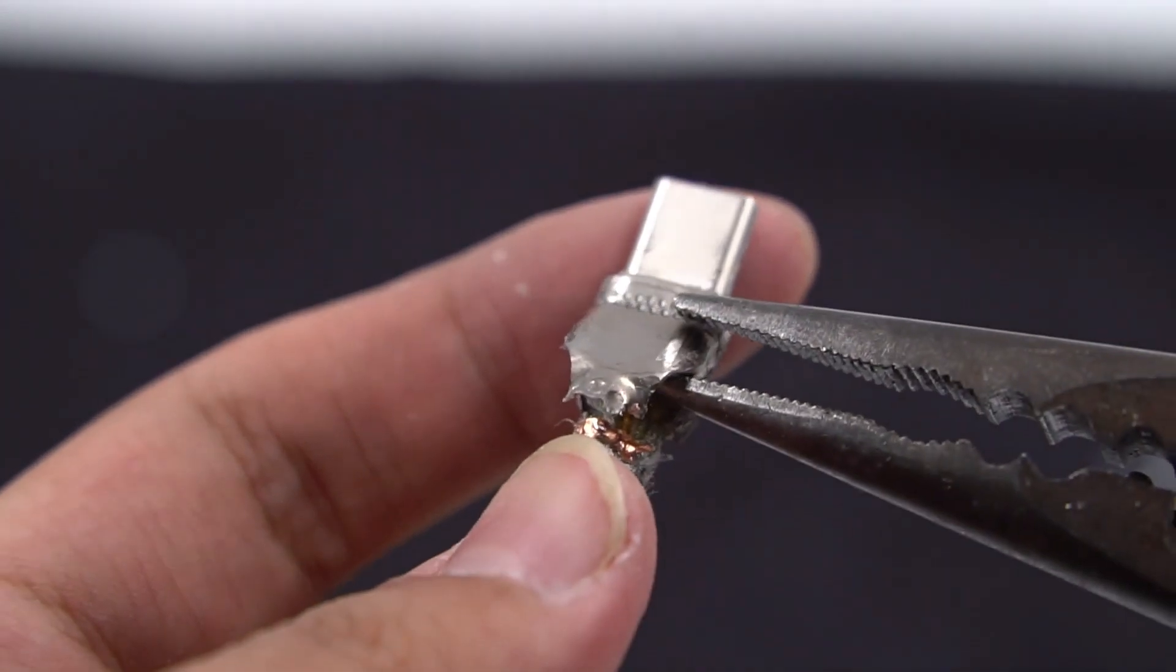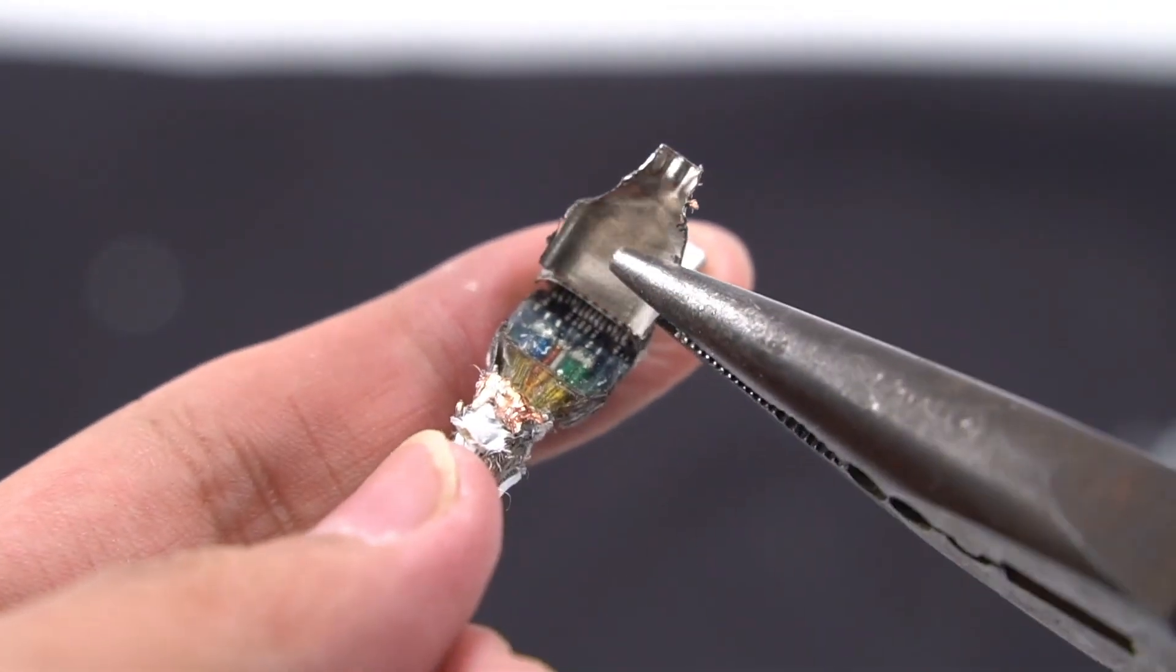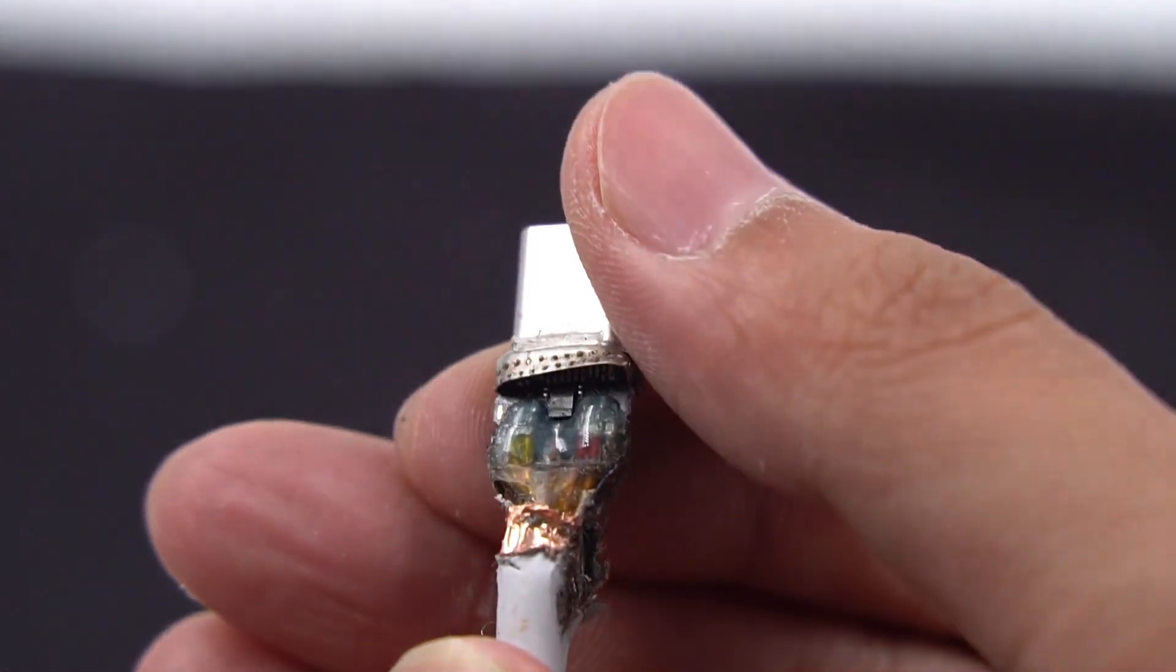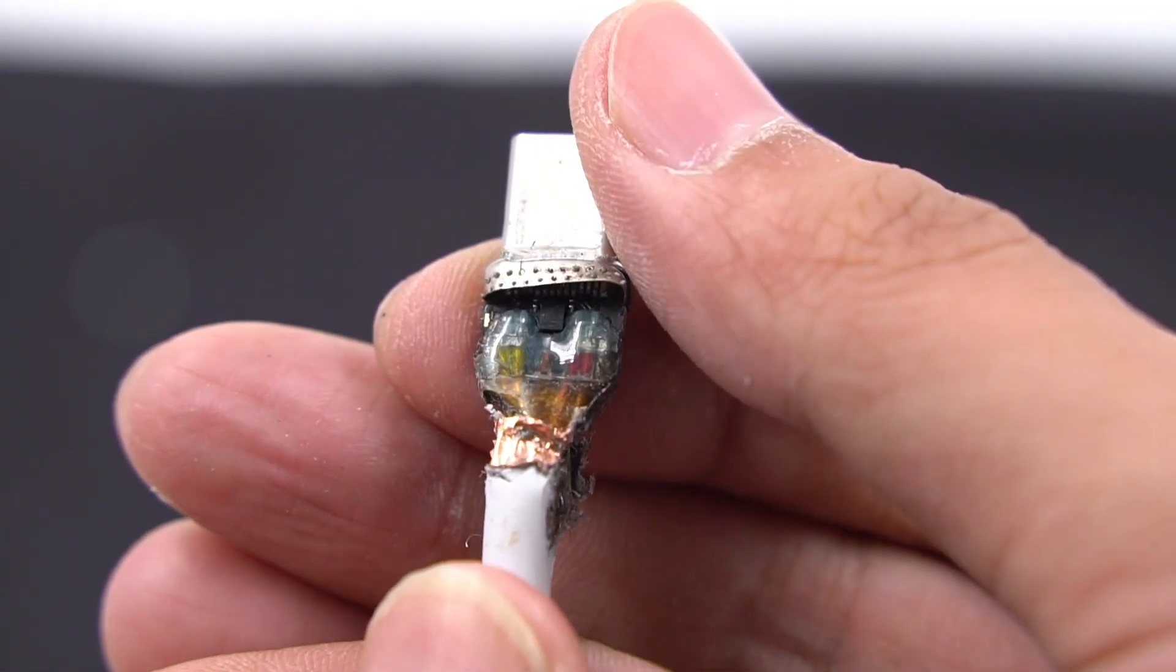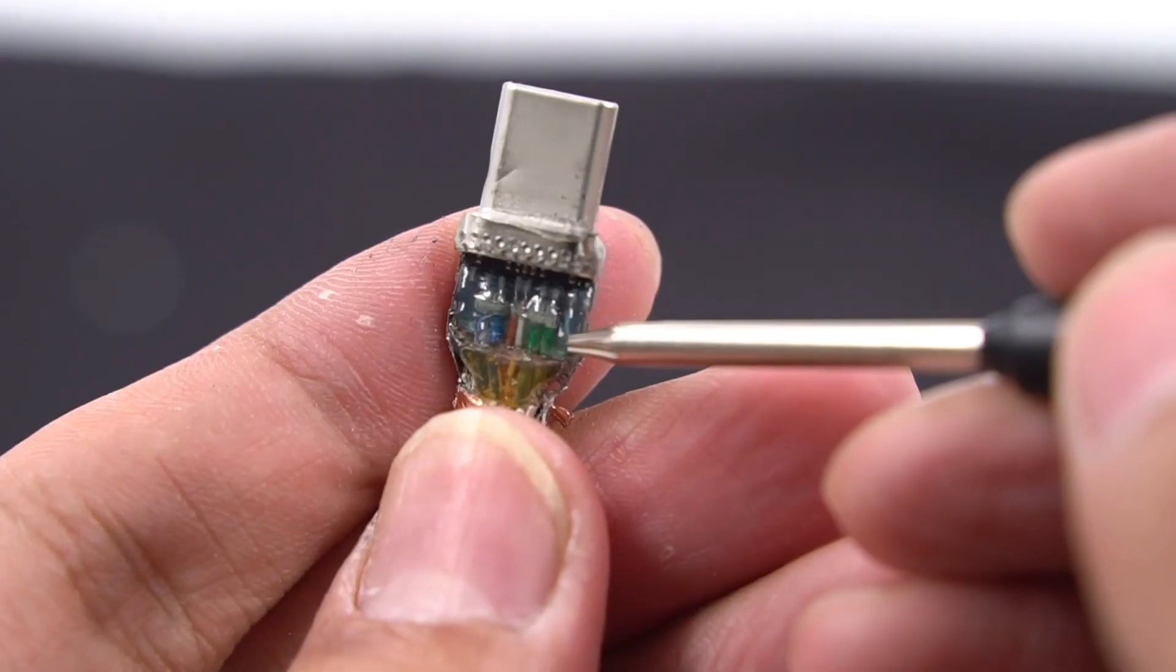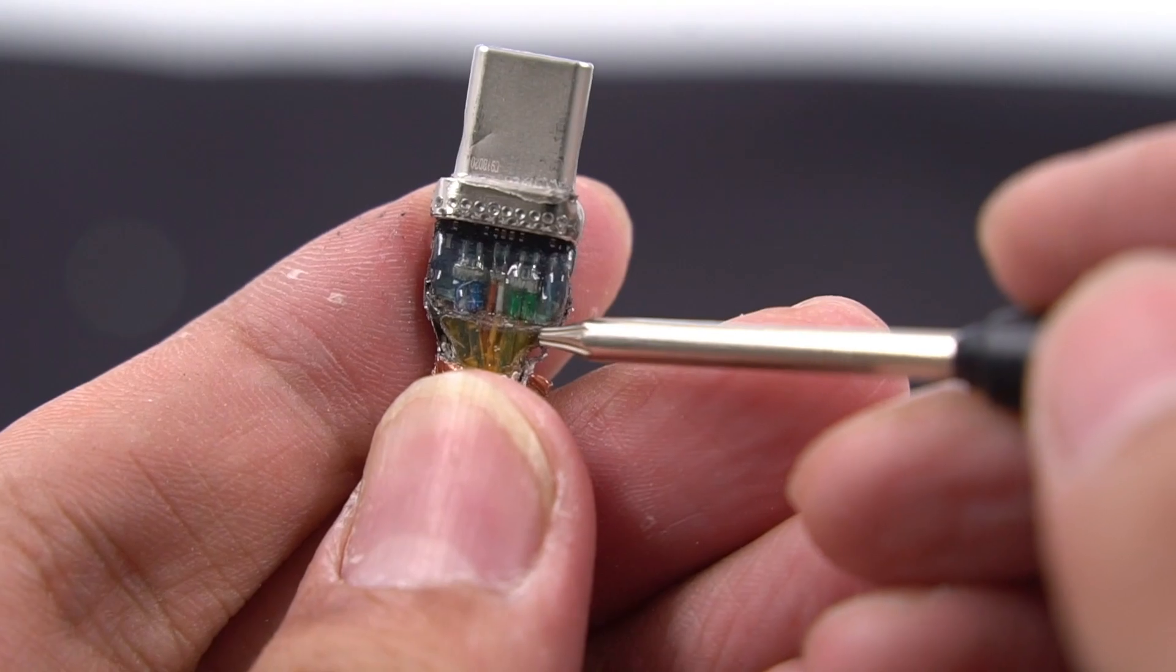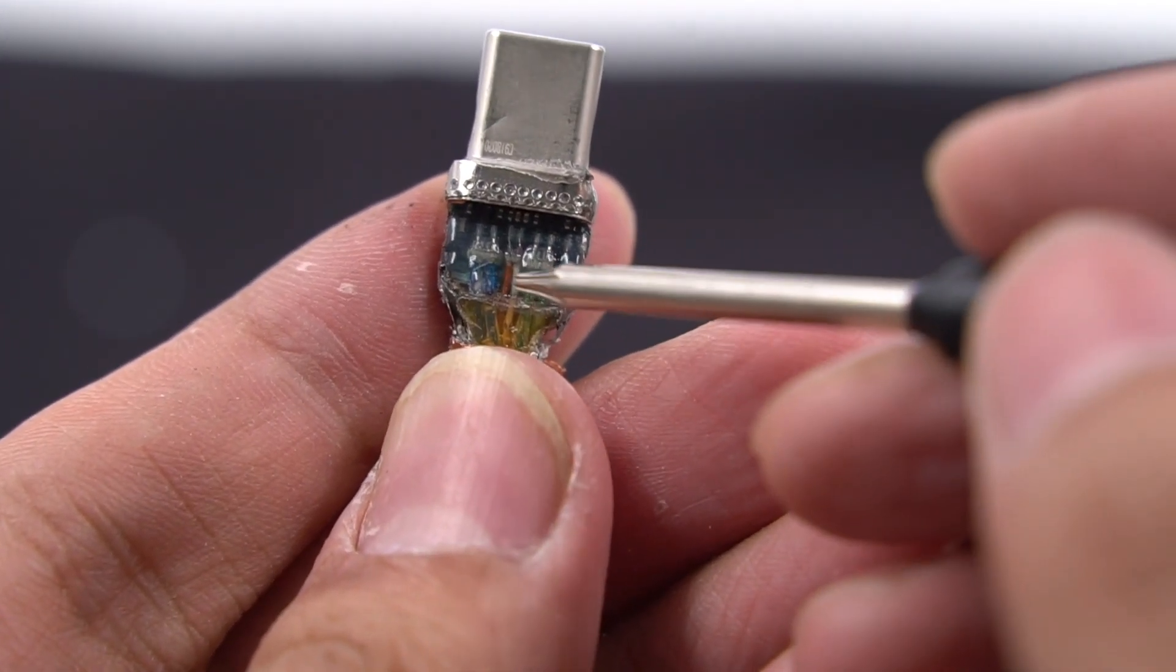After carefully removing the steel sleeve, there is a small PCB inside, which is connected to cable core. The e-marker chip is in the middle. And the ordinary cable doesn't have this chip. This place is fixed by injection molding, cause it's very fragile. So it needs a steel sleeve outside and injection molding inside for protection.